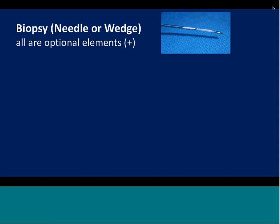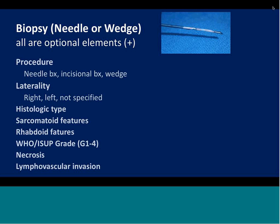Over the past five to ten years, we have seen an extension of biopsy material in our practice. In Calgary, we see on an annual basis about a hundred needle core biopsies. CAP recommends that all elements included in biopsy reports are optional. For instance, the procedure can be needle biopsy, incisional biopsy, or wedge biopsy. Laterality should be included, along with histologic type, presence of sarcomatoid and rhabdoid features, WHO/ISUP subgrade, and presence of necrosis or lymphovascular invasion if identified. Because these are all optional data elements, I'll provide an example of how I sign out needle core biopsies.